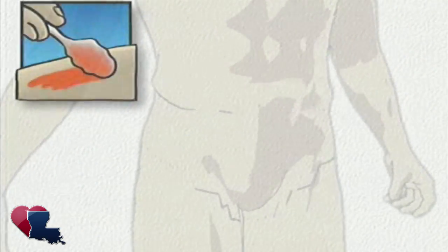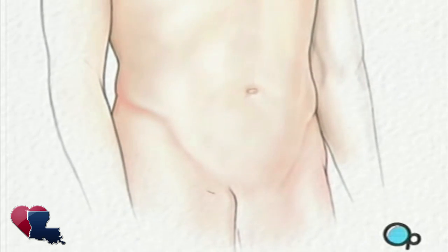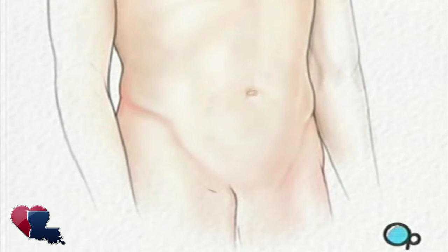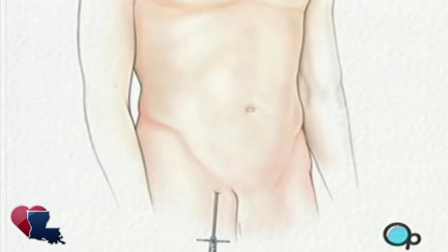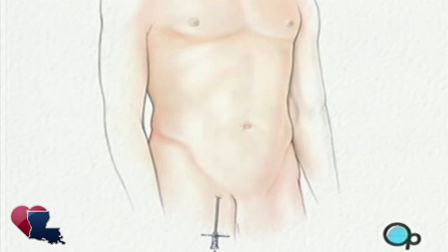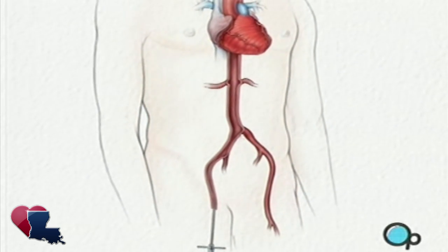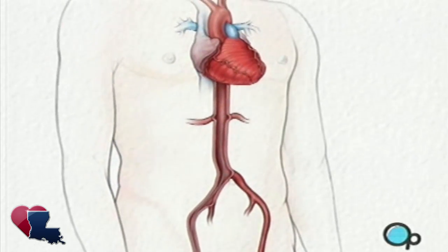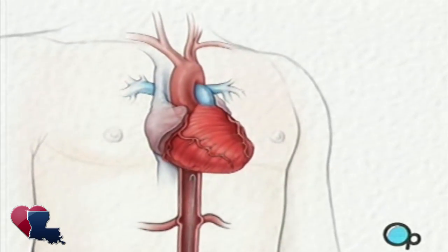To begin, your leg and groin are swabbed with an antiseptic solution. Then the doctor will make a small cut over the femoral artery in the upper part of the leg. A special needle is then inserted into the artery itself. Then a guide wire is carefully passed through the needle and gently pushed into the artery and upwards towards your chest.